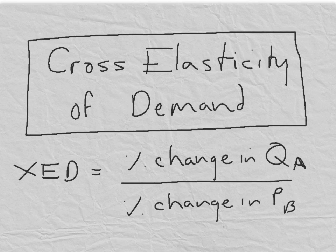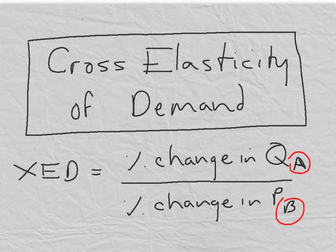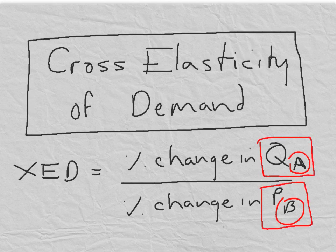Finally, we have the so-called cross elasticity of demand. Now this is the only type of elasticity that actually involves two products. We call them product A and product B. So we are measuring the percentage change in the quantity of product A when there is a change in the price of product B. And this is called the cross elasticity of demand.